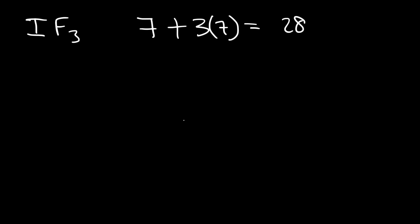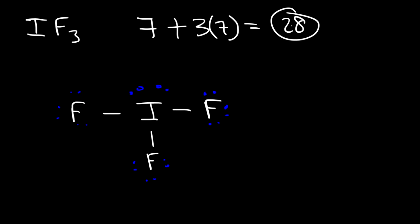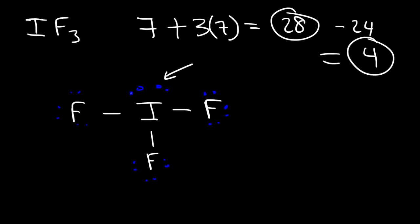Fluorine wants eight electrons, and there are three fluorine atoms, so that's 24 electrons. With three bonds (6 electrons) plus 24, that gives 30 — so we need to add two lone pairs to reach 28. Using the 'multiple of eight' rule: the highest multiple of eight under 28 is 24; subtracting 28 minus 24 gives 4, which equals two lone pairs on the center atom. So IF3 has a T-shaped molecular structure.